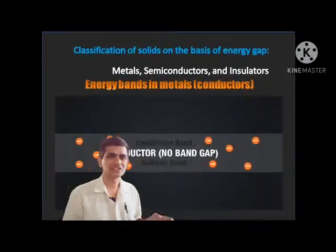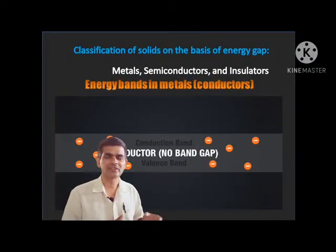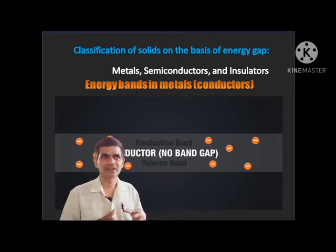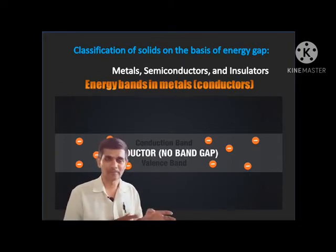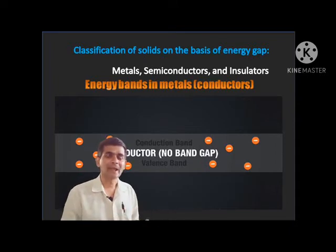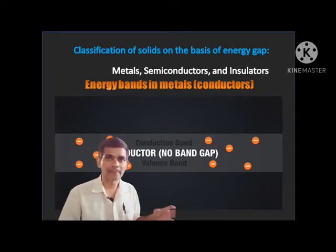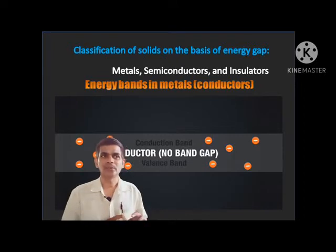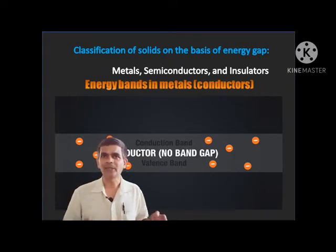Let us understand the classification of solids based on band structures. Metals, semiconductors, and insulators are classified based on band structure. In the case of a conductor, you can observe in pictures that the valence band and conduction band are overlapped. Because of that reason, there will be no energy gap between the valence band and conduction band.